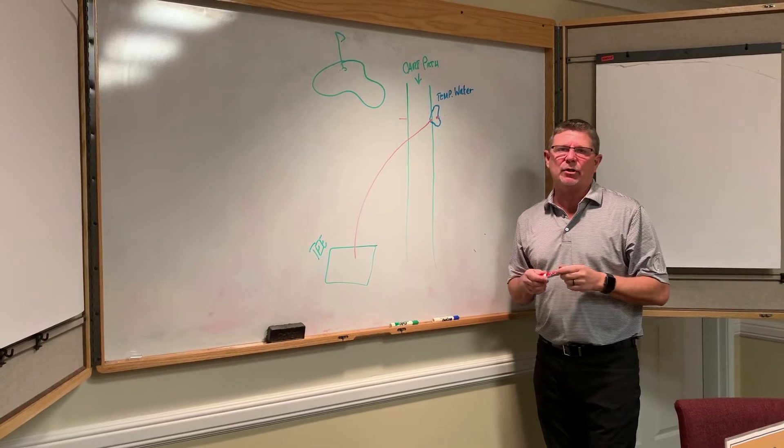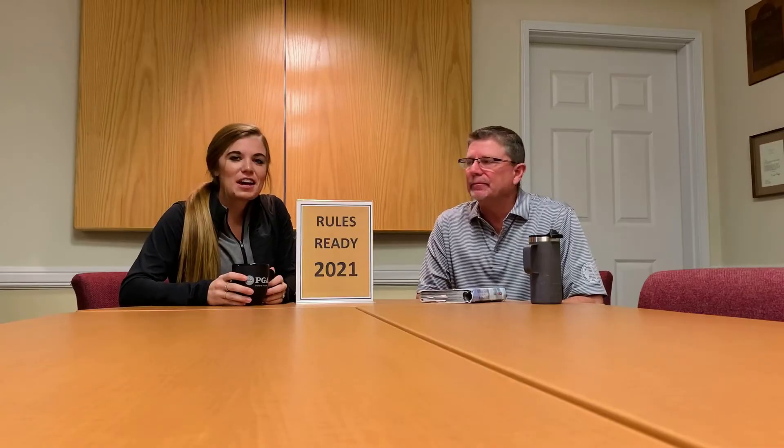That wraps up our session today. I hope you understand and learned more about how to take relief from an abnormal course condition and what the relief process looks like. A reminder: never pick that ball up unless you know for sure that you want to take relief. It makes a lot of sense — there's no reason to add a penalty shot.